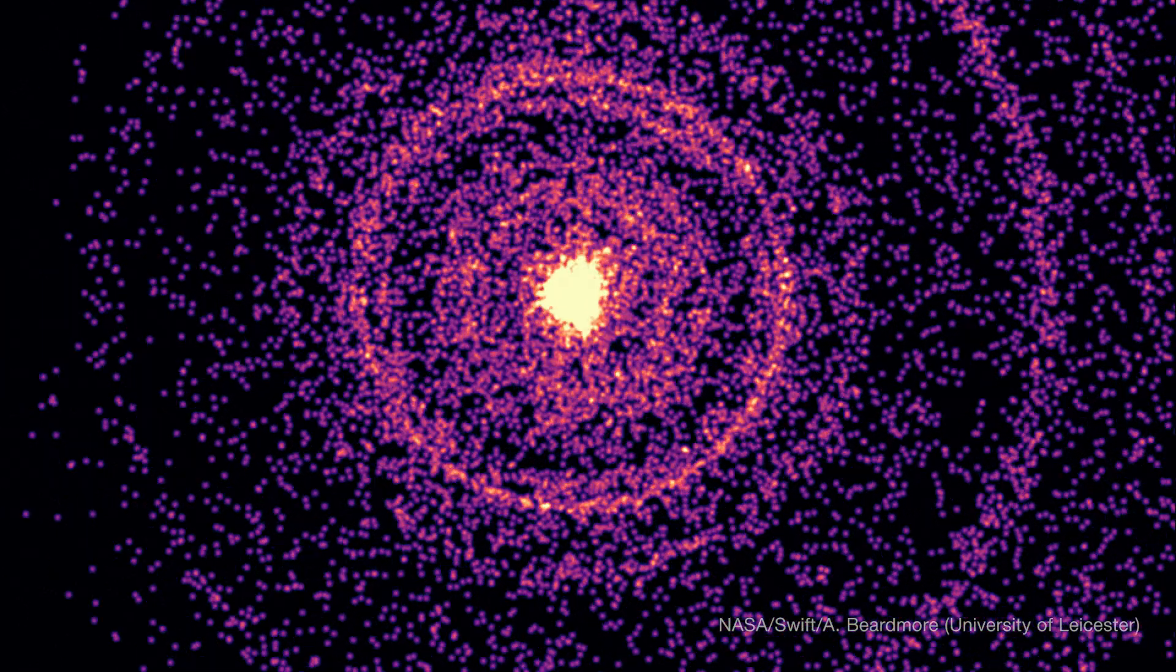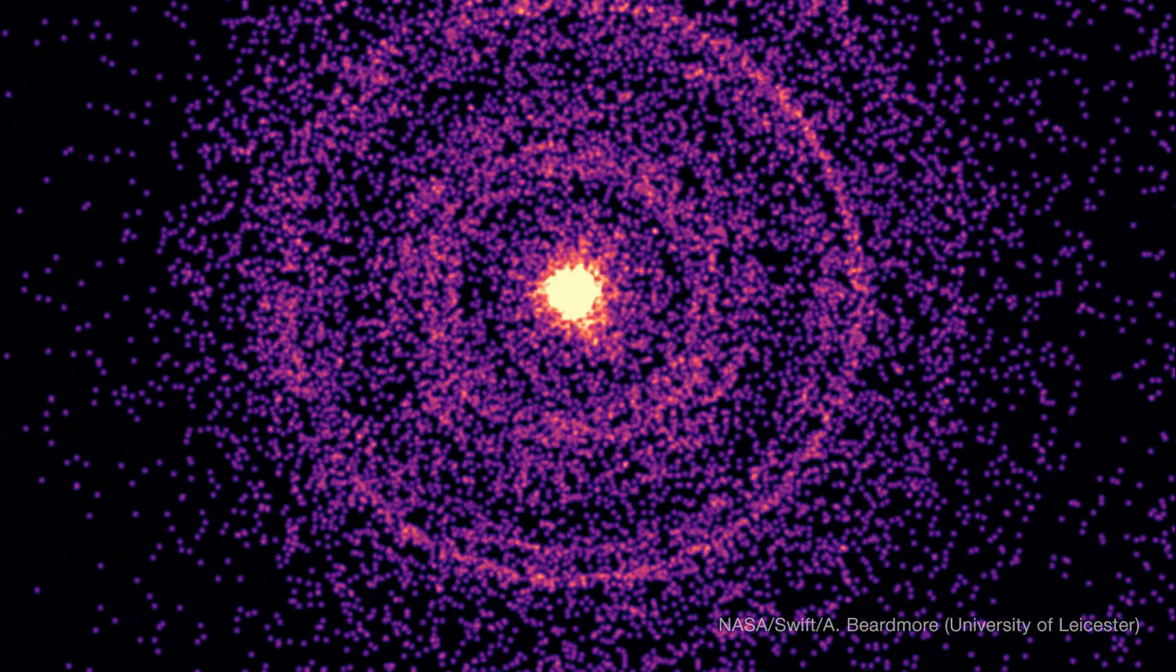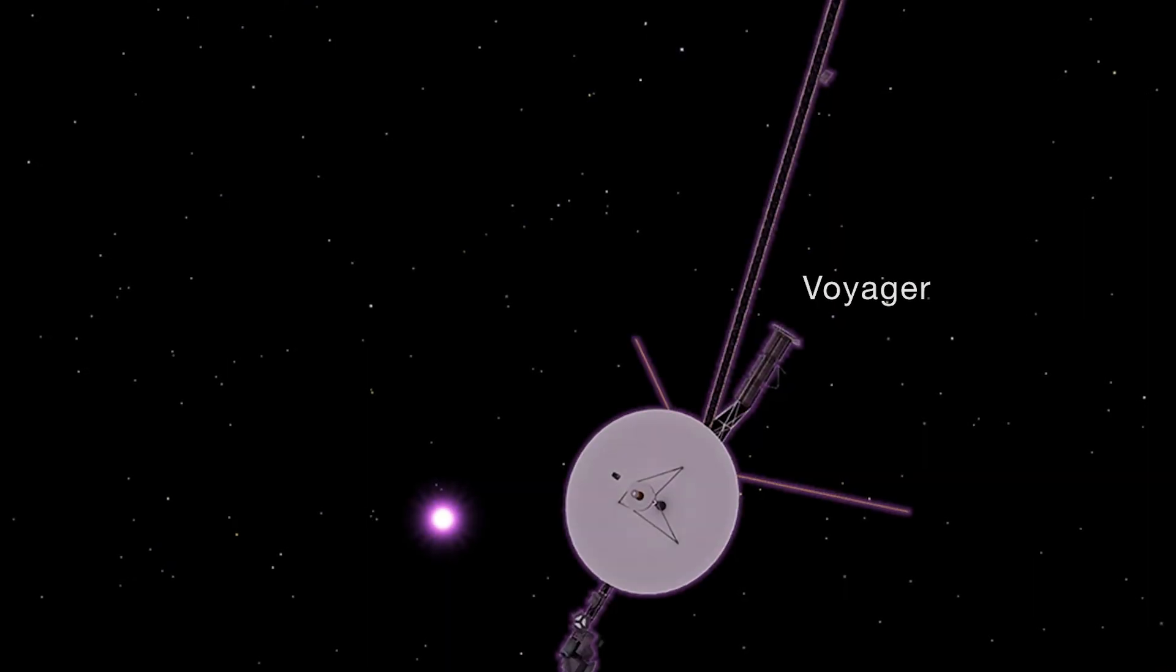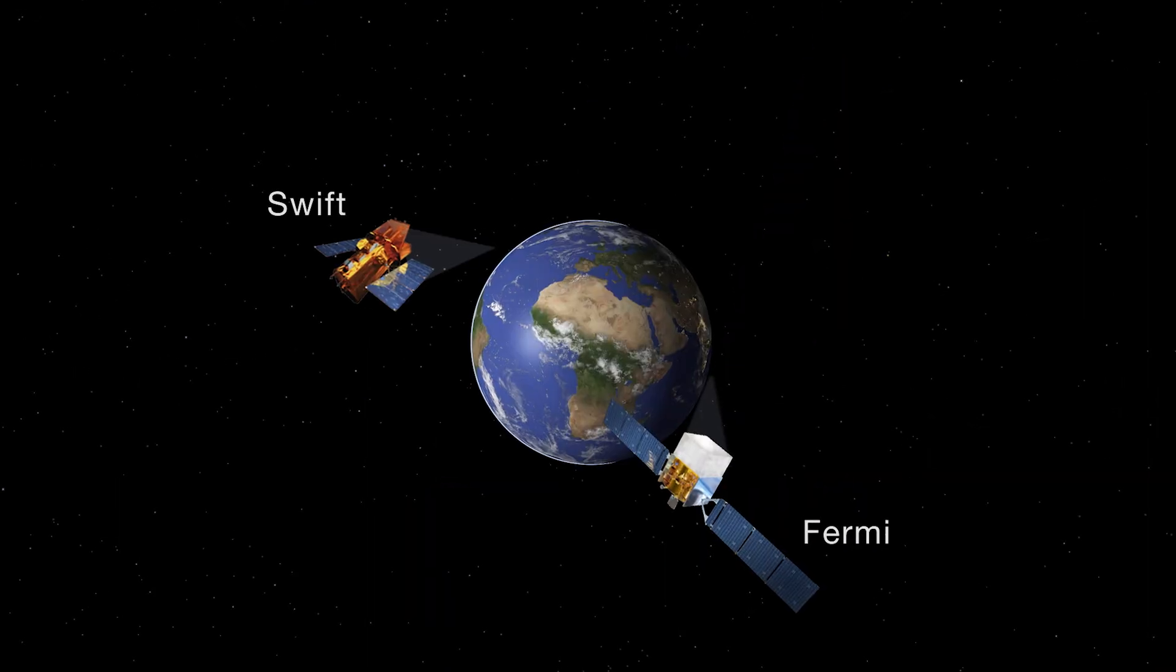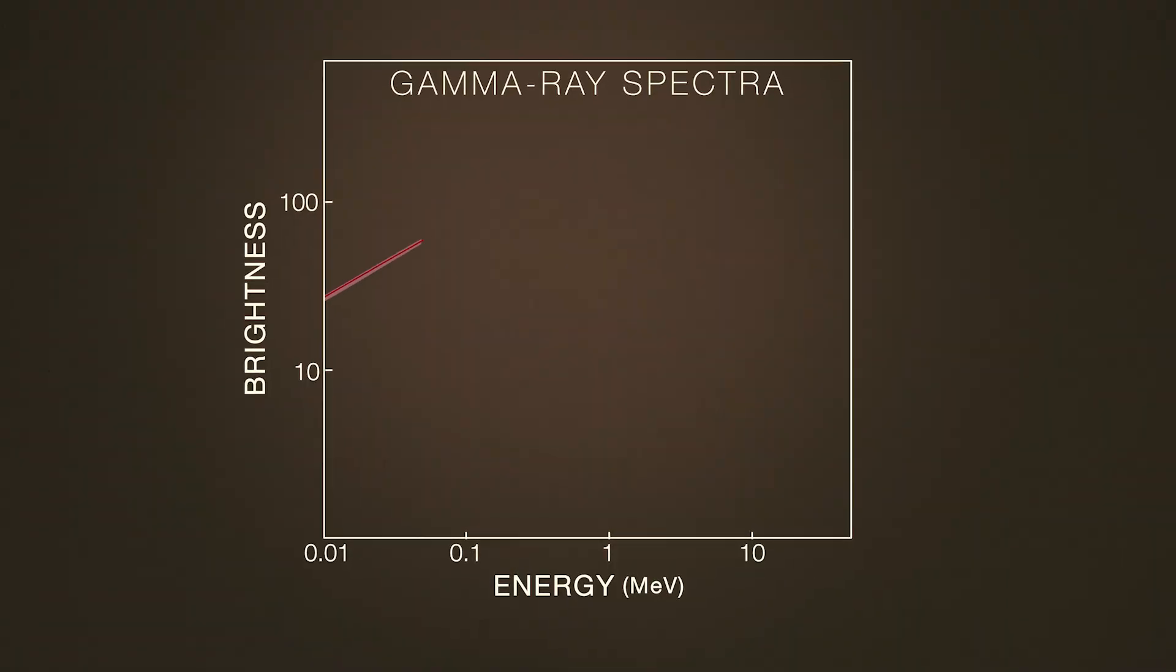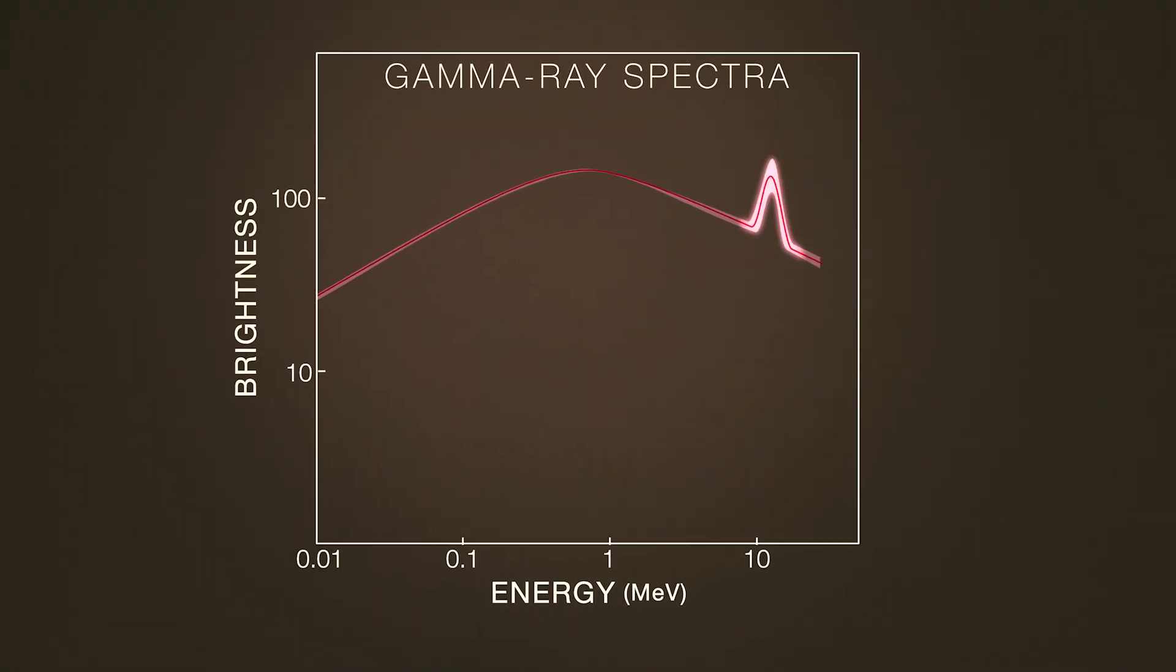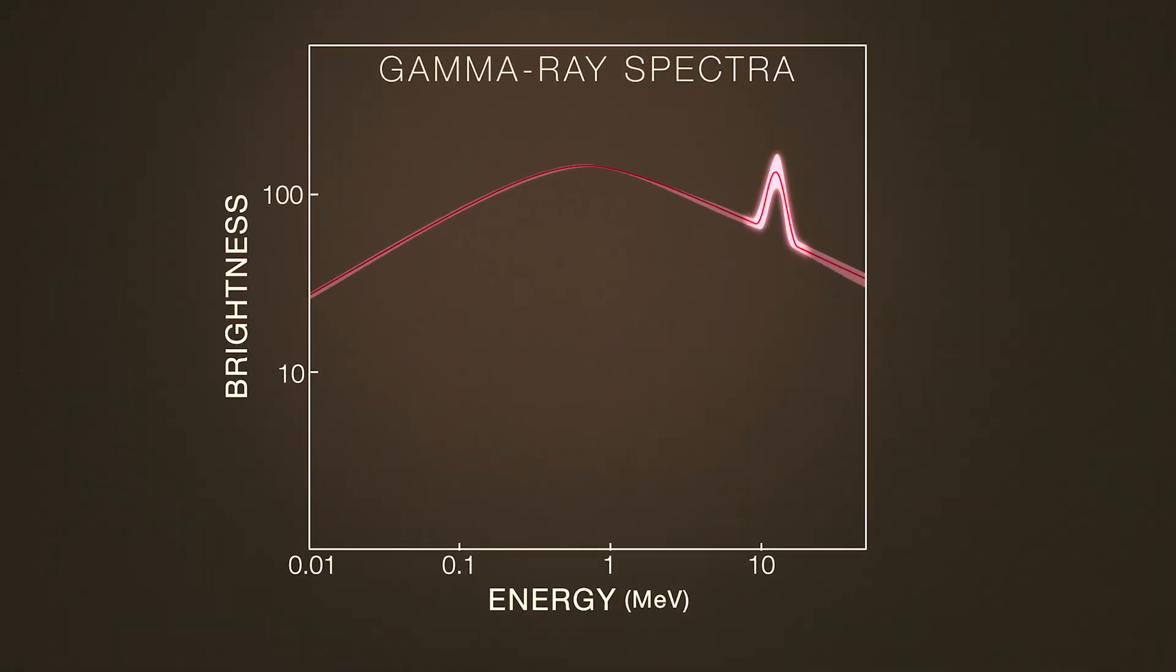In late 2022, the brightest gamma-ray burst ever seen shocked astronomers and even temporarily blinded many high-energy detectors in space. Now, a study of the first few minutes of this burst have found an important feature not seen before.